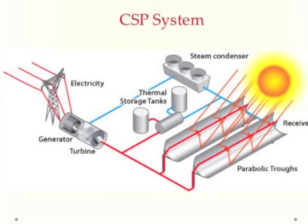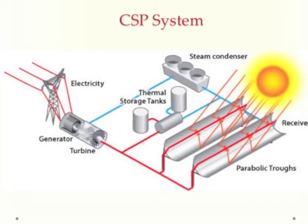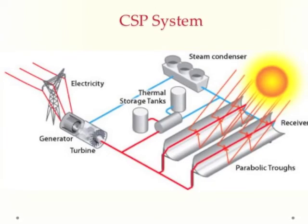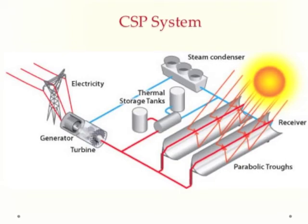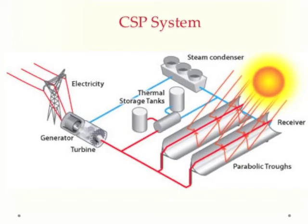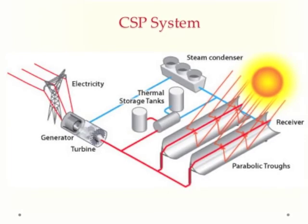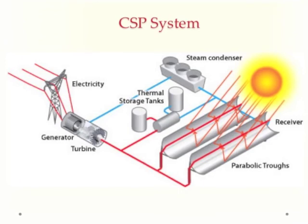The CSP system uses sunlight to produce hot fluid, which is then used to produce steam — much like a coal-burning power plant. The steam is then used to turn a turbine that produces electricity. There's also a condenser, and one new element is storage tanks to store solar-generated heat to be used later in the day or at night.